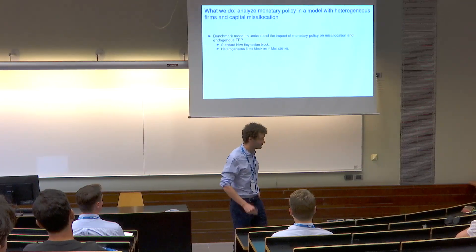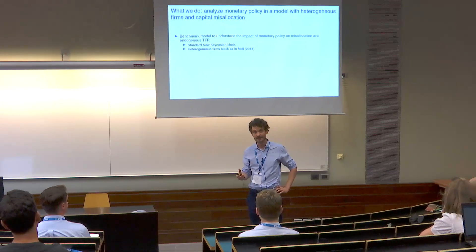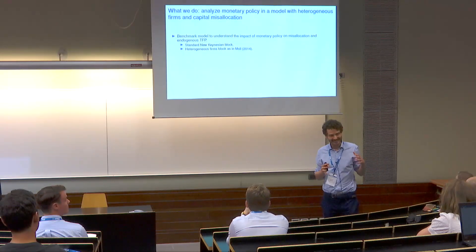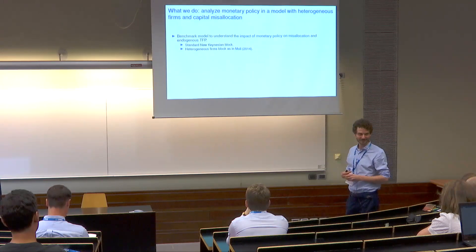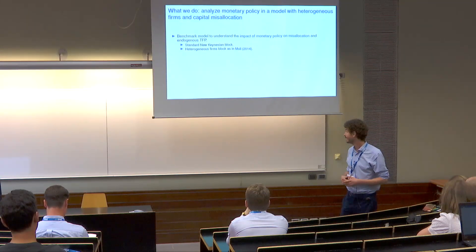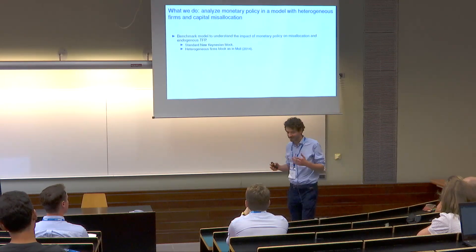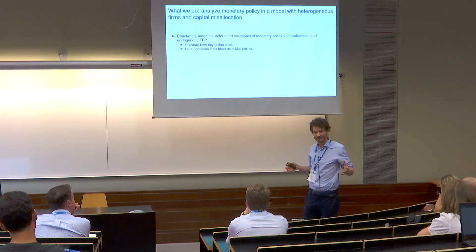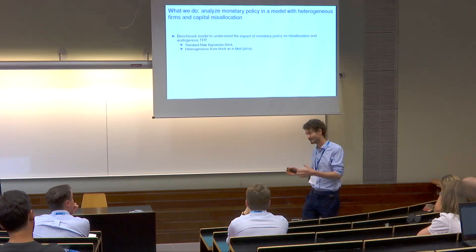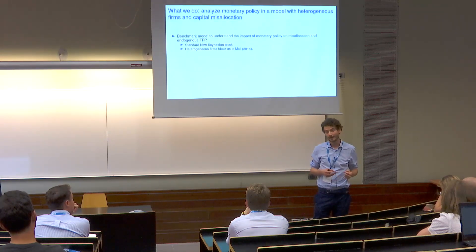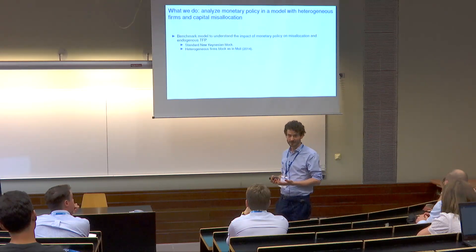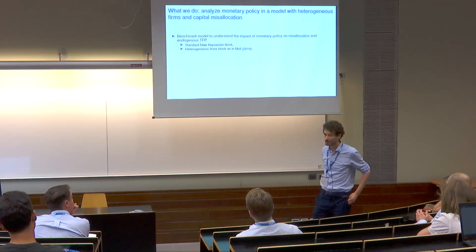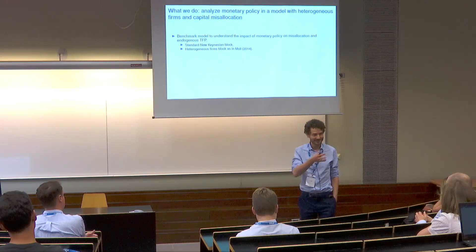To do that, we need two things: a model and a method. For the model, we need to understand how capital misallocation is affected by monetary policy. Just as in Zeke's presentation, capital misallocation is going to be summarized by endogenous total factor productivity. We looked at the literature and didn't find a workhorse model that can do this — his paper wasn't yet there, this was three or four years ago. So we took the standard New Keynesian model and combined it with a tractable model of firm-originating capital misallocation, choosing the model by Ben Moll for its tractability.